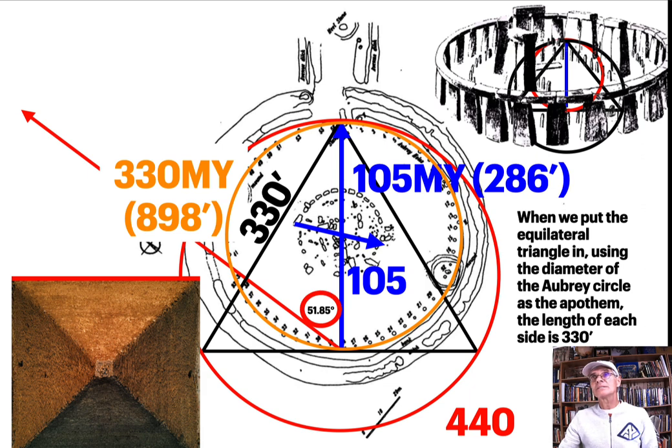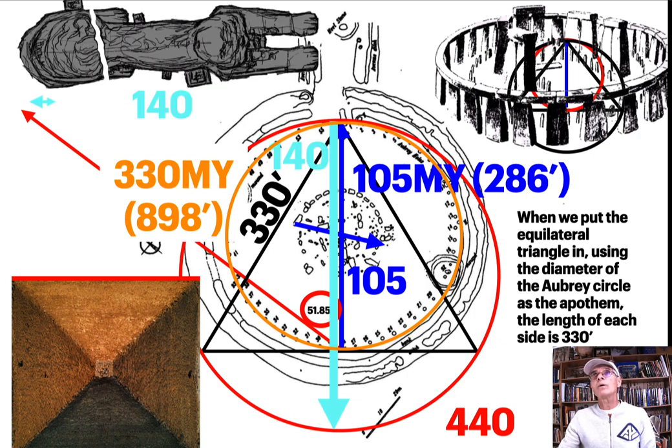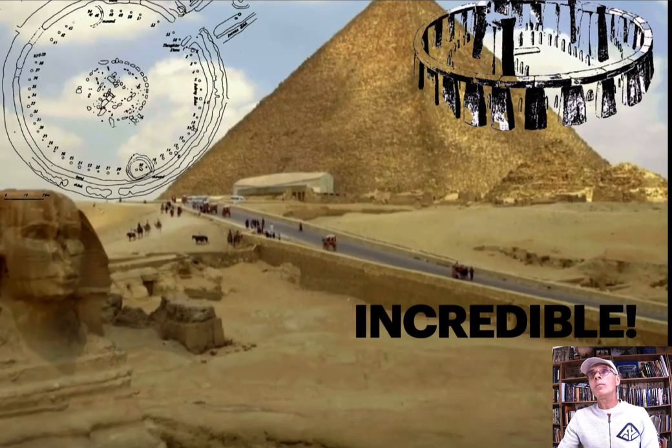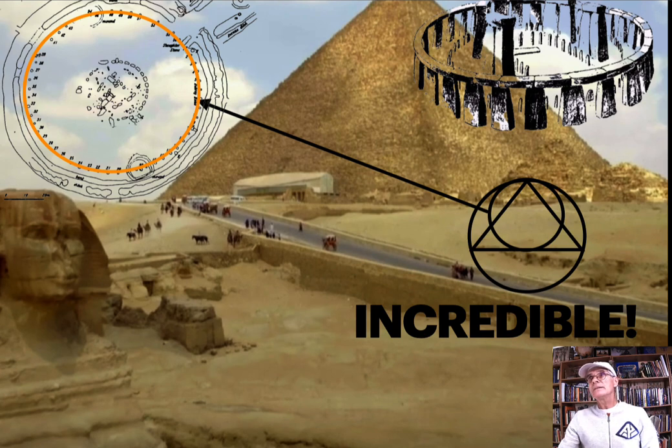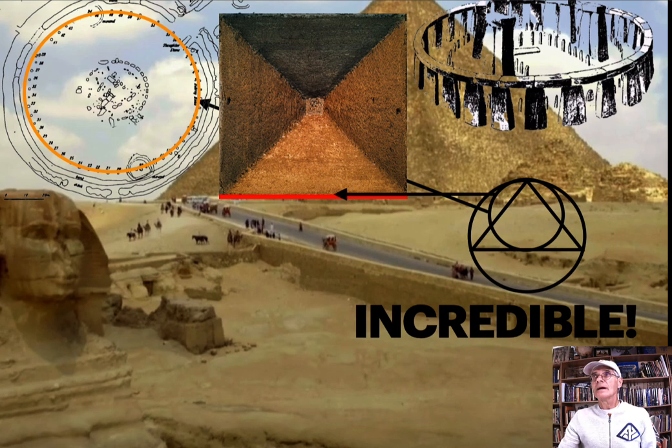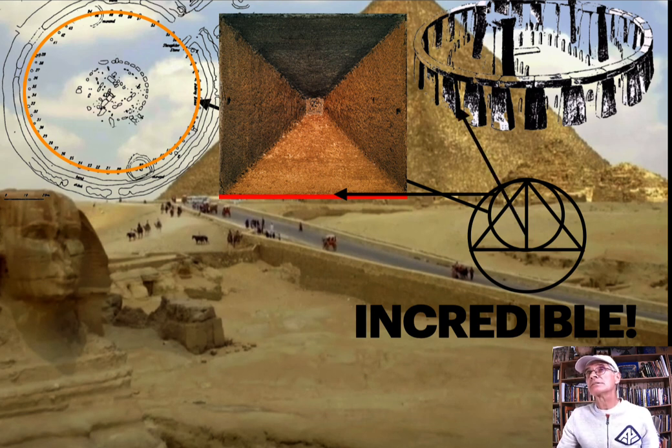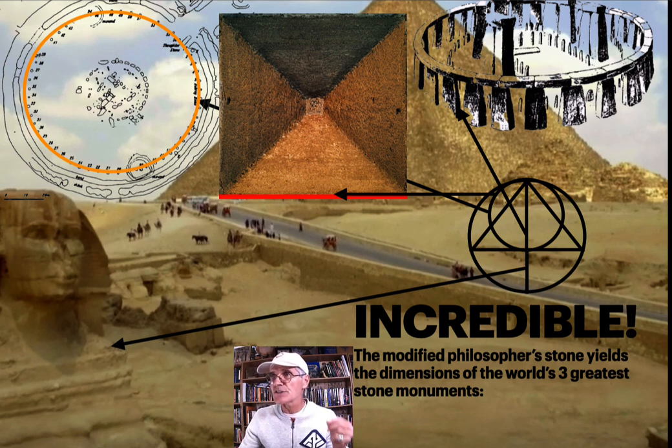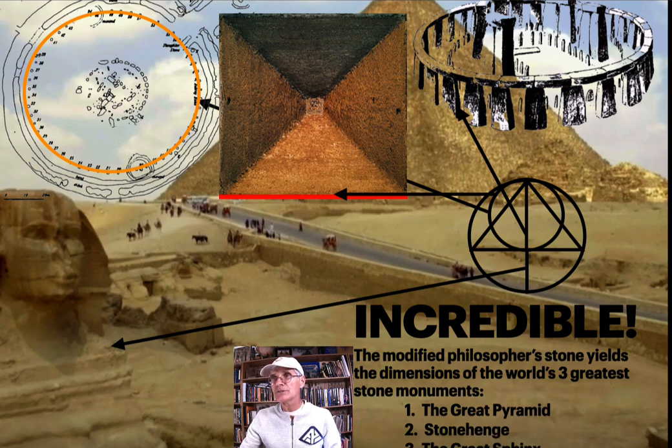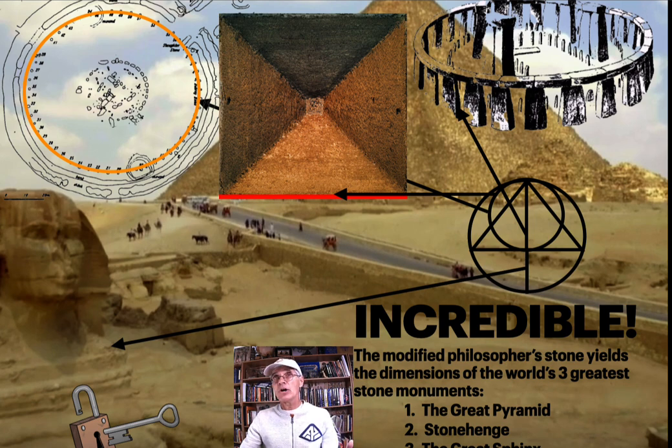We know there's the connection to the Great Pyramid there and the slope angle. What about the diameter of the red circle? It's 140 - that's the length of the Sphinx in royal cubits. This last dimension from the bottom of the equilateral triangle down to the edge of the red circle is 35 - that's the width of the Sphinx. This is incredible. We take this modified philosopher's stone - from the first little circle we get the Aubrey circle, the exoscribed circle gives us the Great Pyramid, the apothem gives us the Sarsen circle at Stonehenge, and the full diameter gives us the Sphinx. The modified philosopher's stone yields the dimensions of the world's three greatest stone monuments.